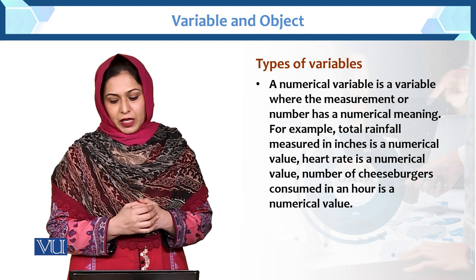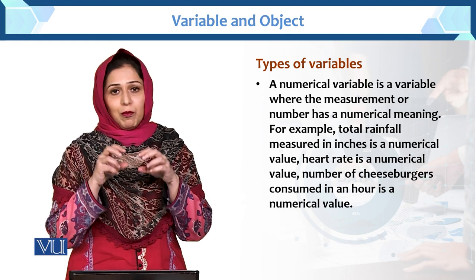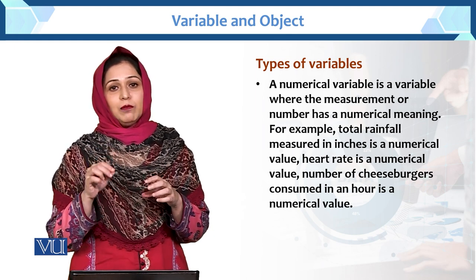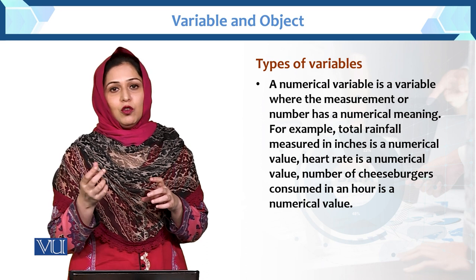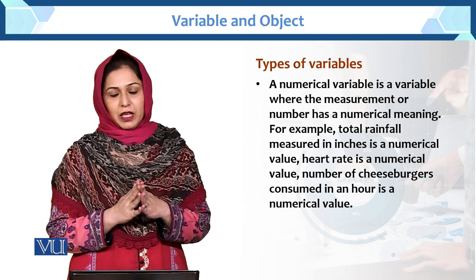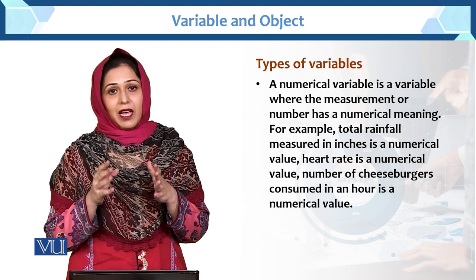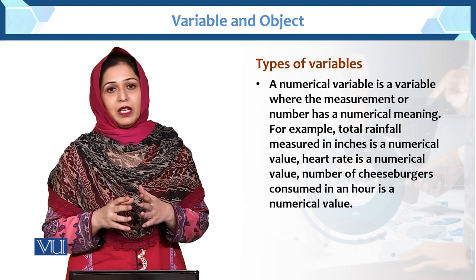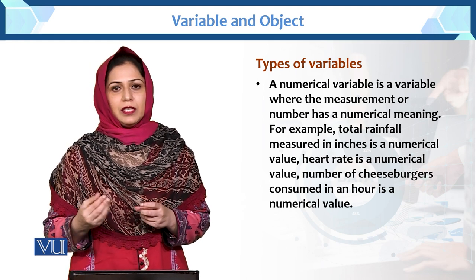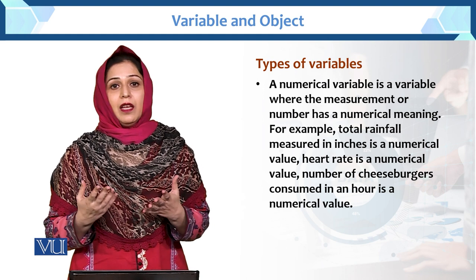Number of cheeseburgers consumed in an hour is a numeric value. Jahan pe bhi number ka word aata hai, jisay hum measure kar sakte hain in terms of number, this is called the numeric variable. Number of cheeseburgers consumed in an hour — kitne burgers ek hour mein consume kare — jahan hum usko 10, 20, 30 numeric value se assume kar sakte hain, these are called the variable.